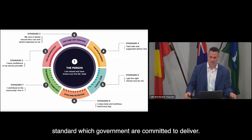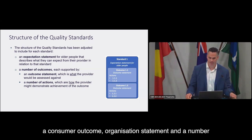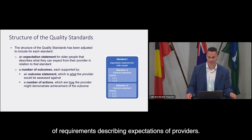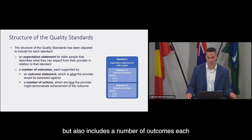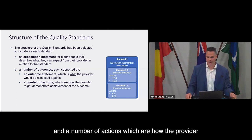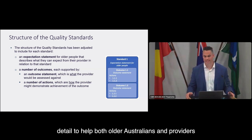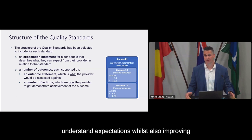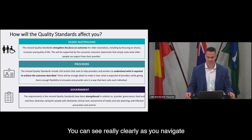The current quality standards are outcome-focused and comprise eight standards, each including a consumer outcome, organisation statement, and requirements describing expectations of providers. The structure of the revised standards has been adjusted to include, for each standard, an expectation statement for older Australians and their families describing what they can expect from their provider. It also includes a number of outcomes, each supported by an outcome statement which is what the provider will be assessed against, and a number of actions which are how the provider might demonstrate achieving the outcome. This structure allows for more detail to help both older Australians and providers understand expectations while improving measurability.